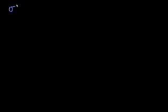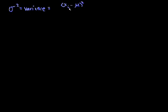Before we go into the variance of a sample, it's instructive to review the variance of a population so we can compare their formulas. The variance of a population uses the Greek letter sigma squared — lowercase sigma squared means variance. It equals: for each data point x sub i, find how far it is from the mean of the population, square it, then take the average of all of those. You sum from i equals 1 to n, then divide by n.